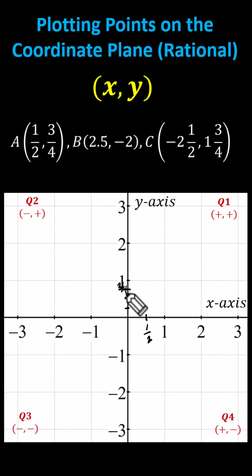Now to plot point A, because x is one-half, we go right half a unit from the origin. And then because y is three-fourths, we go up three-fourths of a unit to locate point A. This is point A.